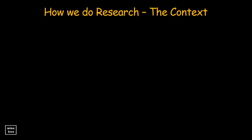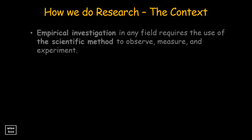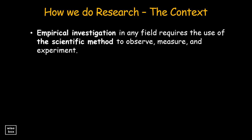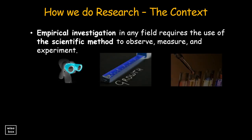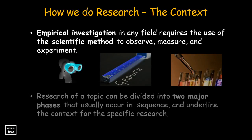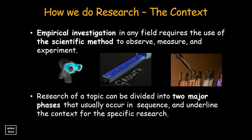The context of research — empirical investigation in any field requires the use of the scientific method to observe, measure, and experiment. Research of a topic can be divided into two major phases that usually occur in sequence, and align the context for the specific research.